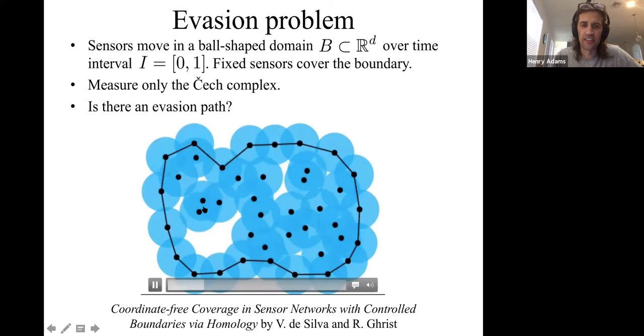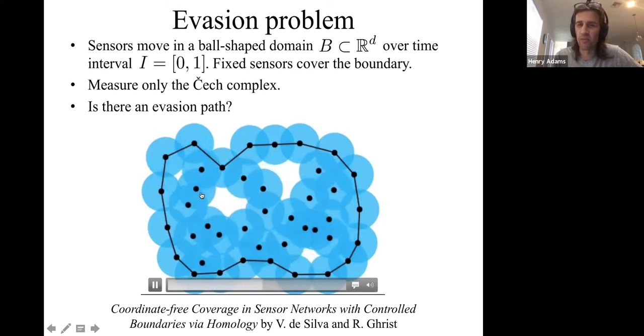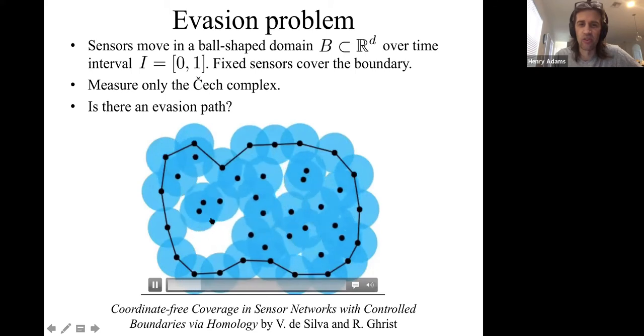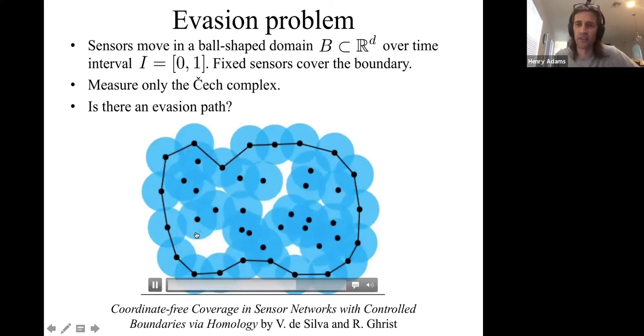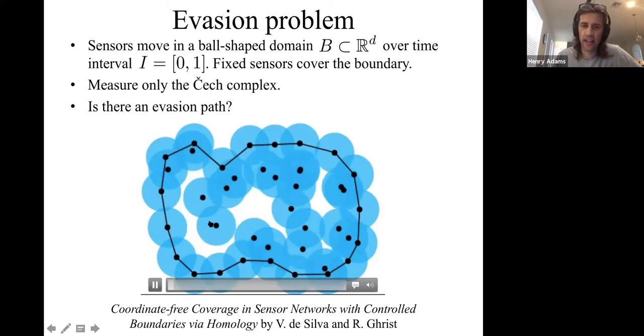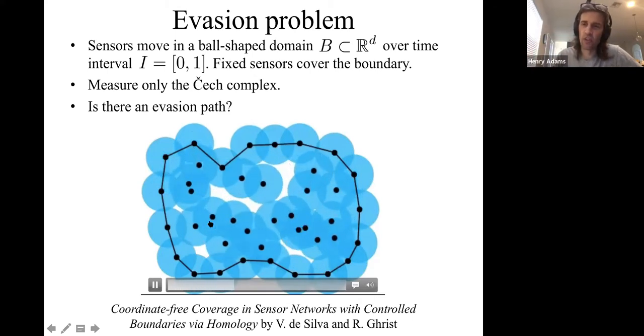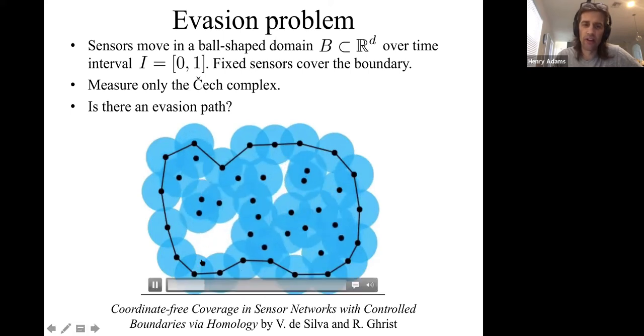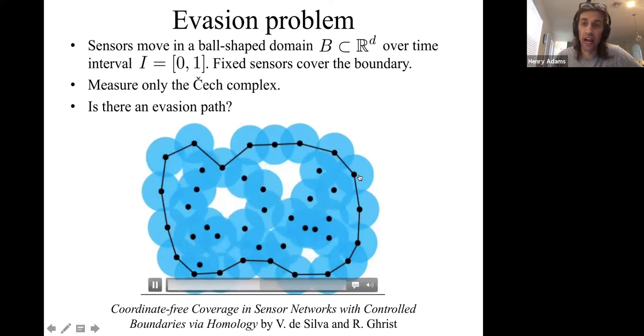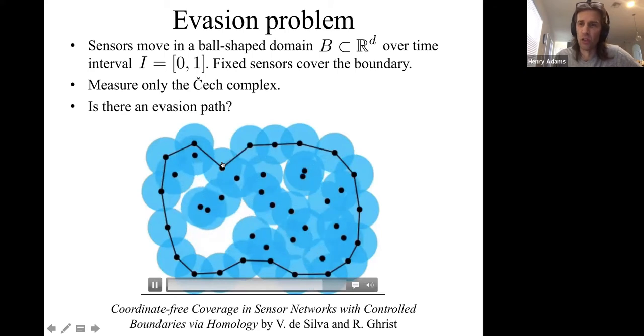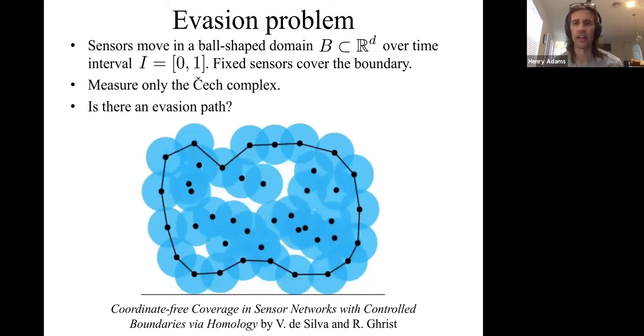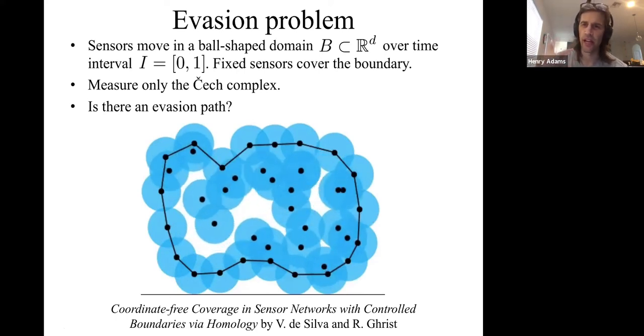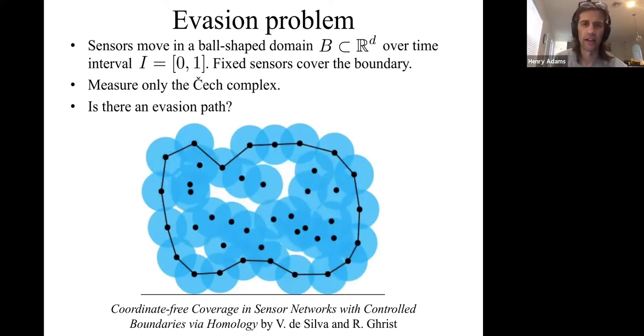We have moving sensors, as you can see here. Each black dot is a sensor center, and the blue ball is the region covered by that sensor. These sensors are allowed to move and wander however they like, with the one condition that we have fixed sensors around the outside of our domain that don't move. These are called the fence sensors. We have some time interval, and the sensors just wander as time varies.